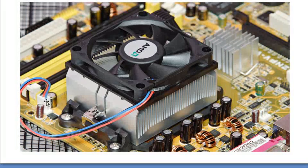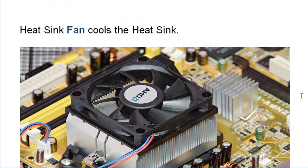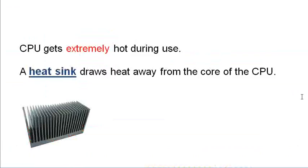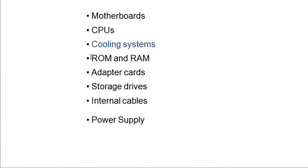The power cable connects to the motherboard and that's how the heat sink fan is powered. Every time you turn on your computer, electricity goes into the motherboard and all the components, and the heat sink fan turns on straight away. The case fan is also connected to the motherboard and turns on as soon as you start your computer. So that's your cooling system — heat sink fan and case fan. Next we're going to be looking at ROM and RAM, so check out the next tutorial.